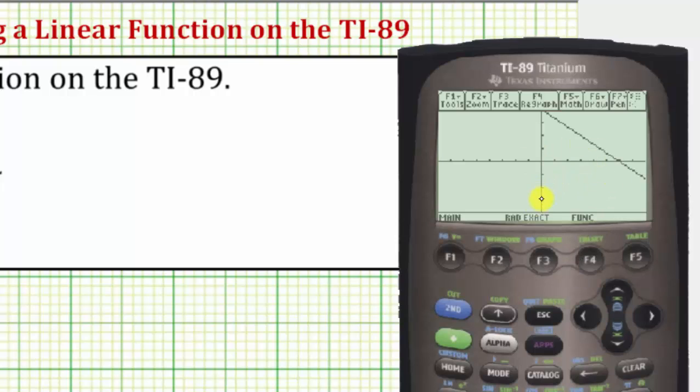It regraphs the line with a different window, and after we trace along the line by pressing F3, notice how the X values are now convenient decimals. So if we scroll to the right, notice how we could select points it would be easy for us to plot on our paper.